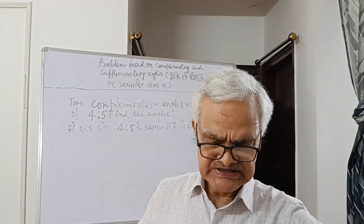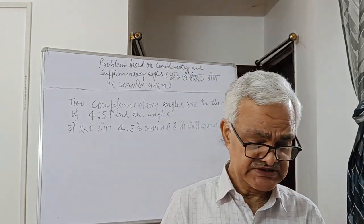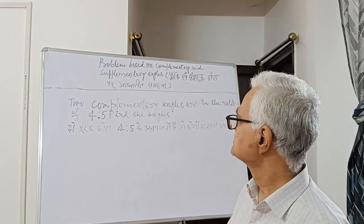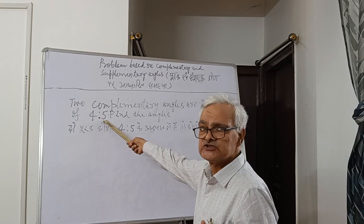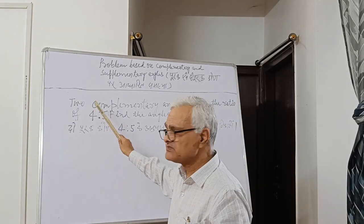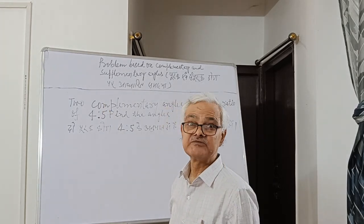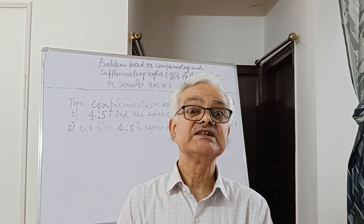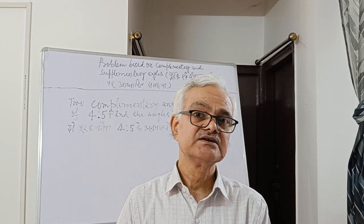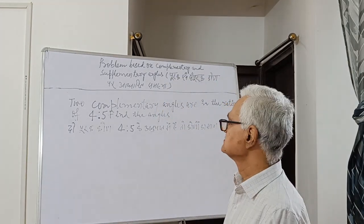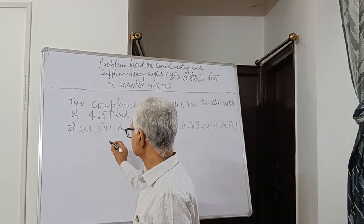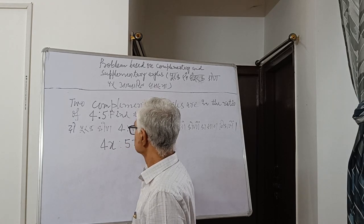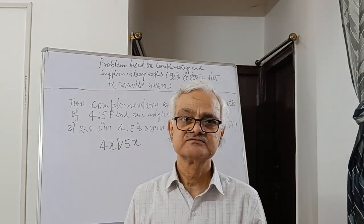In this problem, the ratio is given and the problem is about complementary angles. Two complementary angles are in the ratio of 4 to 5. So 4 is multiplied by a number and 5 is also multiplied by the same number. We cannot suppose a constant angle, but we can suppose an angle which is a variable. So let us say both are multiplied by x, giving us 4x and 5x. So the angles are 4x and 5x.